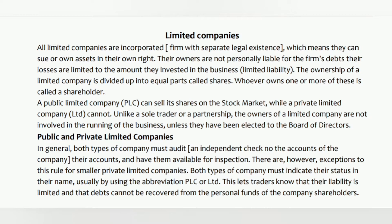Limited liability: the ownership of a limited company is divided up into equal parts called shares. Whoever owns one or more of these is called a shareholder. A public limited company (PLC) can sell its shares on the stock market, while a private limited company (Ltd) cannot. Unlike a sole trader or a partnership, the owners of a limited company are not involved in the running of the business unless they have been elected to the board of directors.